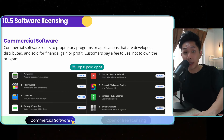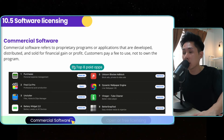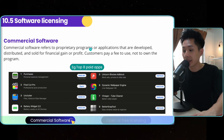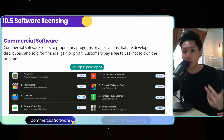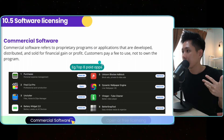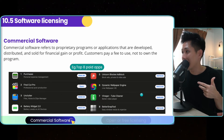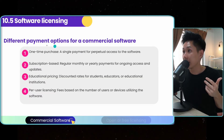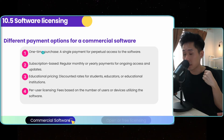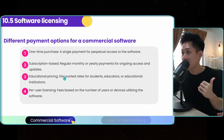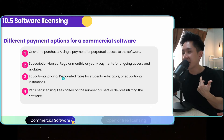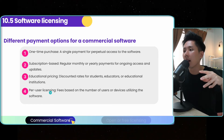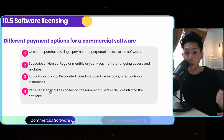Let's look into the different types of software licensing. If you were to create software in the future, you might want to decide how your software can be distributed. The first type is commercial software — you give the customer the right to use the software provided they pay a fee, but they do not own the software. Different payment options for commercial software include: a one-time purchase where you pay and use it forever; subscription-based like YouTube Premium where you pay every month; educational pricing, which I use as an educator for Canva; and per-user licensing, where if a school wants to purchase the software for a group of teachers, they have to pay for each teacher that uses it.